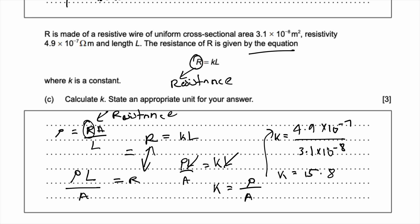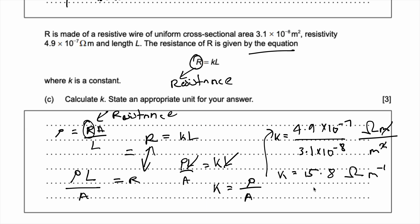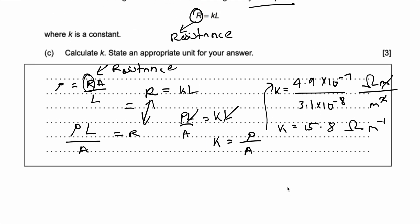Now for the units: resistivity has units of ohm·meter, and cross-sectional area has units of meter squared. Ohm·meter divided by meter squared — meter and meter cancel — so the unit is ohm per meter, or Ω m⁻¹. That's your answer. Thank you for watching — please like and subscribe, and if you have any questions leave them below and I'll answer as soon as possible.